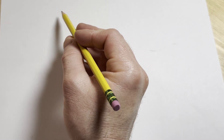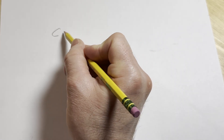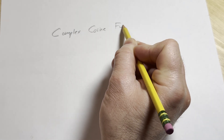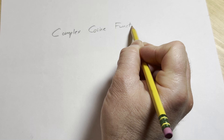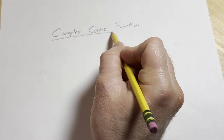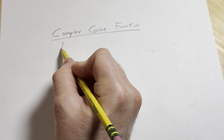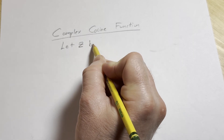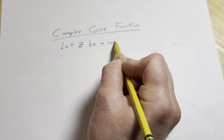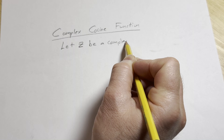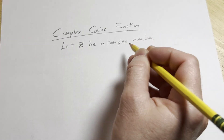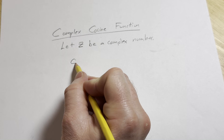In this video we're going to define the complex cosine function — that is, the cosine of a complex number. So let z be a complex number, and then we can define the cosine of z as follows.